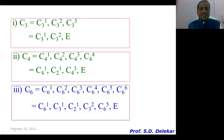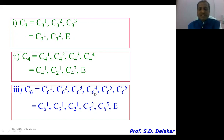Similarly, for benzene, you know that C6 is the principal axis of symmetry. Each C6 consists of 6 subelements: C6¹, C6², C6³, C6⁴, C6⁵, and C6⁶.